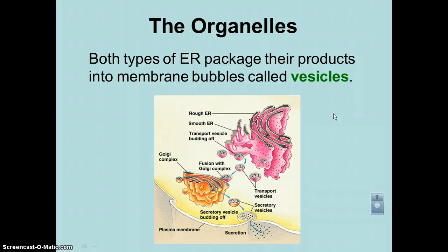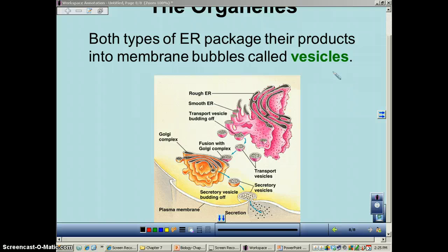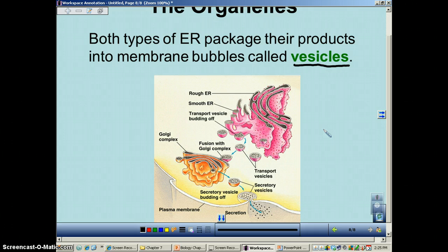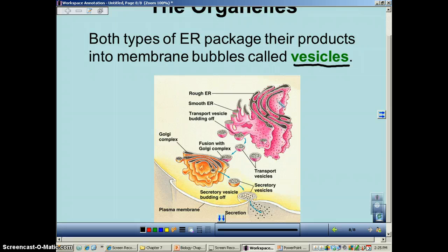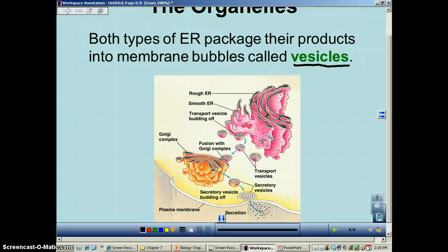Both types of ER are going to package their products into little membrane bubbles called vesicles. These vesicles are very important — they're pretty much shipping containers. Think of when UPS delivers something to your house, it will be in a box. Basically, the box that cellular materials or cellular products are put in — those are called vesicles. In this picture, this would be your rough ER with all the little ribosomes making it bumpy, and over where it's not bumpy, that's going to be your smooth ER. The rough ER has produced some vesicles containing cellular material — could be some form of enzyme or whatever.